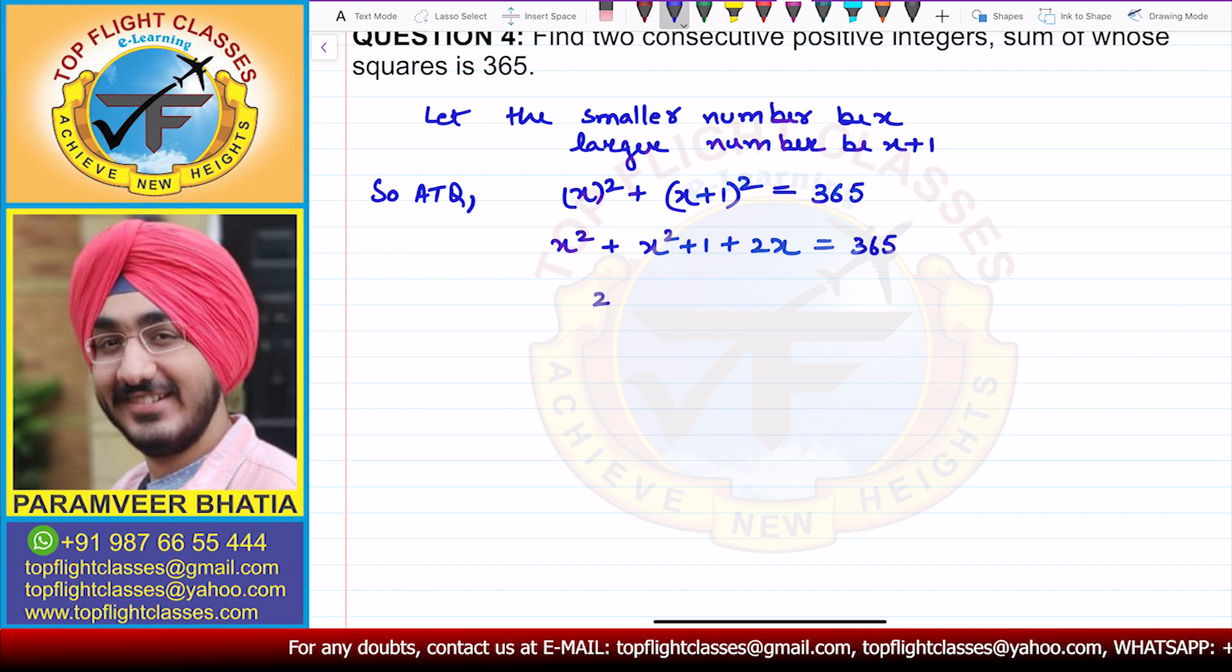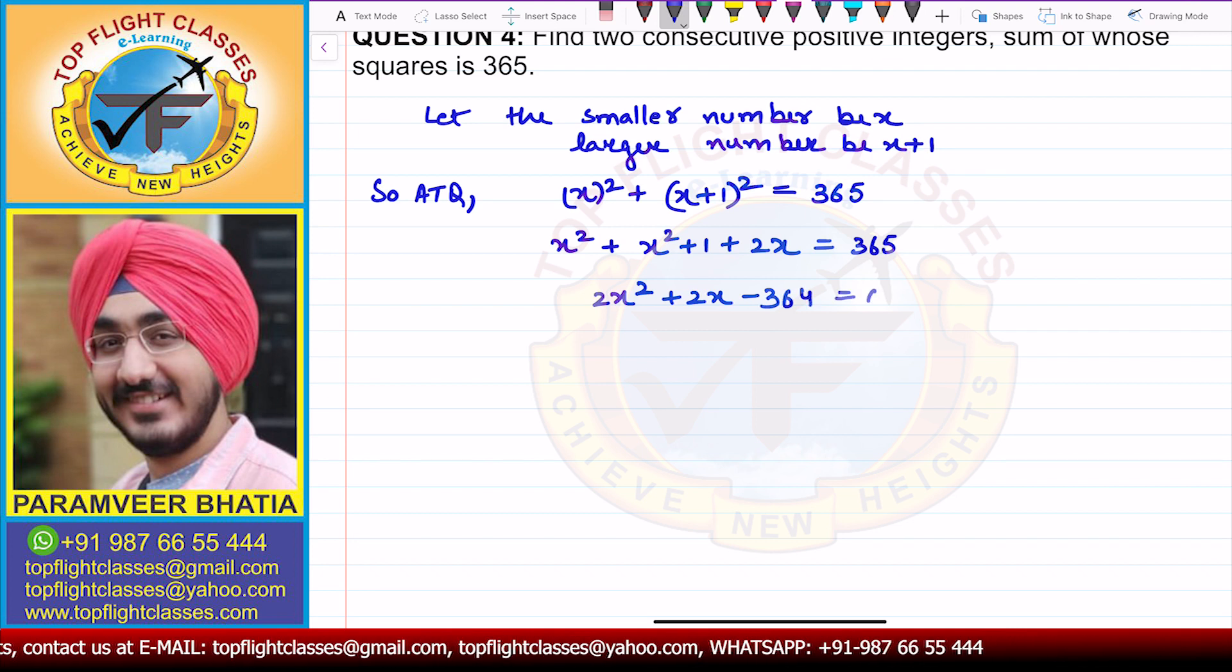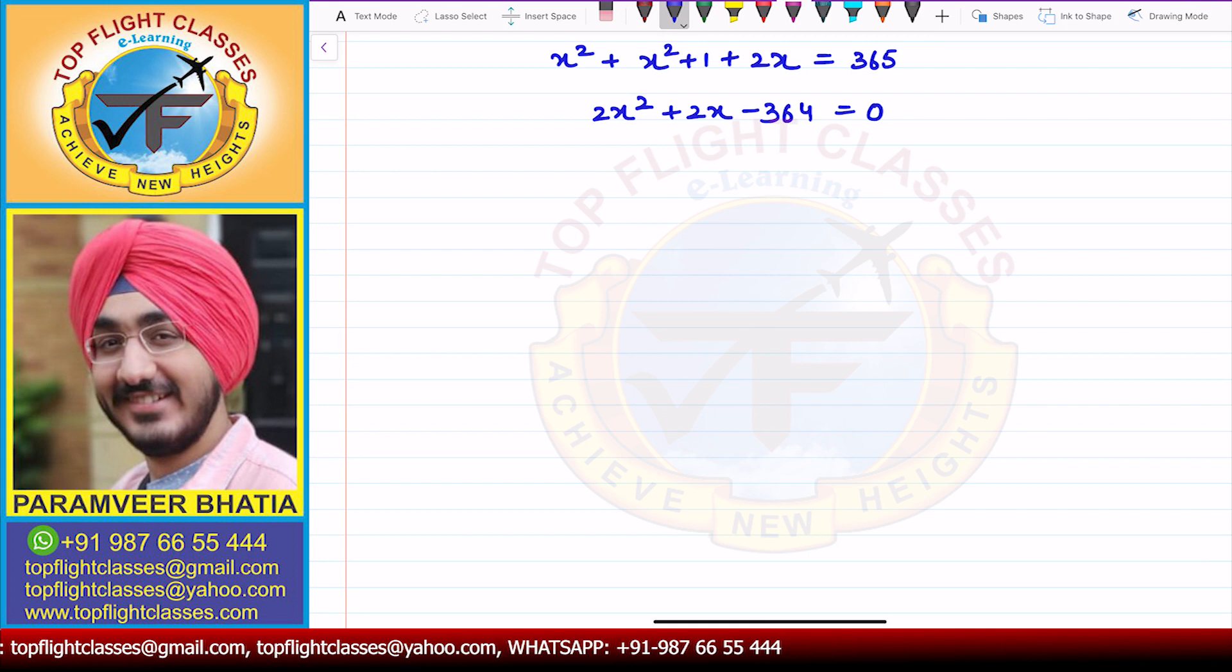So now, on solving this, I will get 2x square plus 2x minus 364 is equal to 0. So here, what have we got here? If I take two common out from here, I will get x square plus x minus 182 is equal to 0.